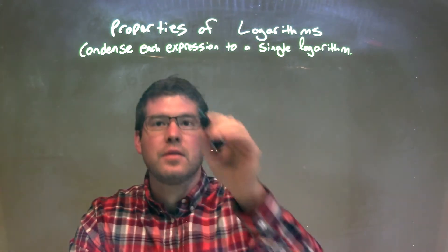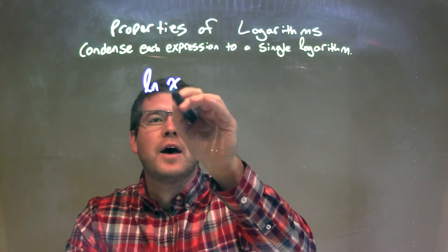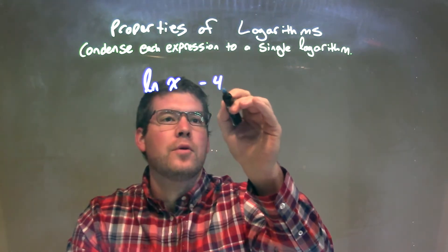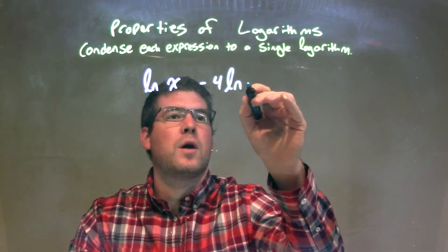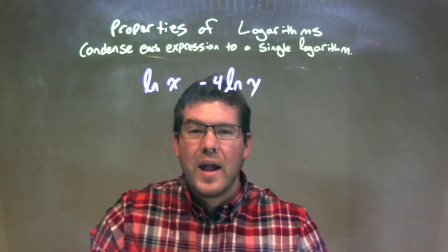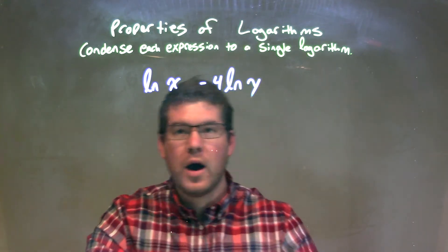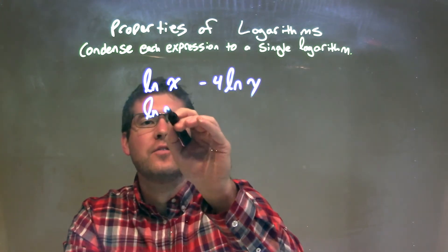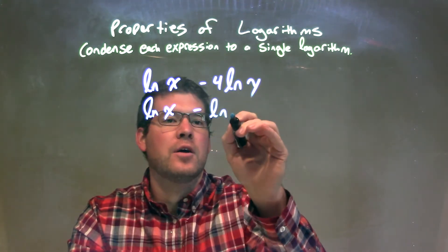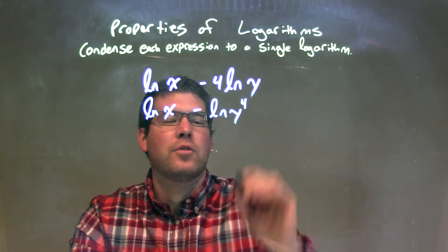So if I was given the natural log of x minus 4 natural log of y, well, when I'm condensing this, I see that 4 that's right out front. I'm going to put that as the power of the y, which we can do. So we have the natural log of x minus the natural log of y to the 4th power.